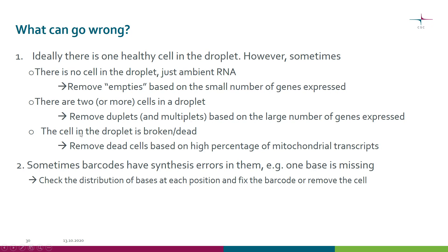It can also happen that the cell in the droplet is broken or even dead. We detect this by checking the percentage of mitochondrial transcripts — if it is high, the cell was likely not healthy. When a cell is broken, normal RNA can be degraded, but mitochondria resist better so mitochondrial transcripts survive, giving a high percentage. In the case of DropSeq, there can also be synthesis errors in the barcodes, but those can be detected and fixed to a certain extent.